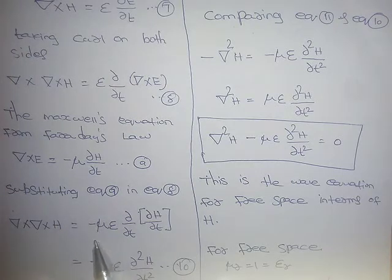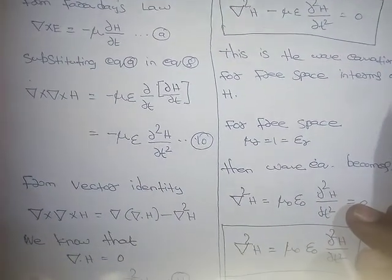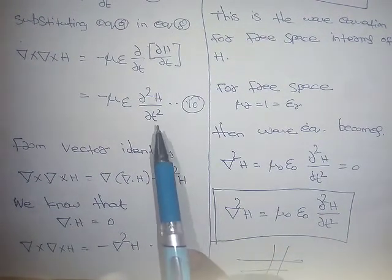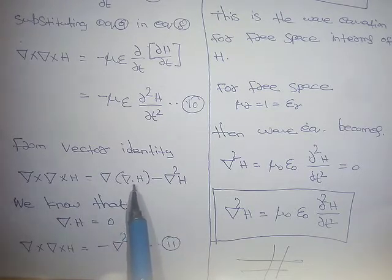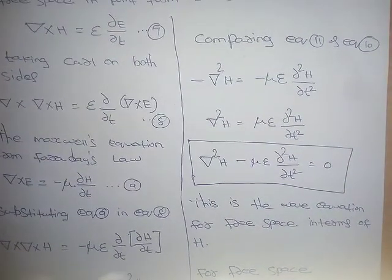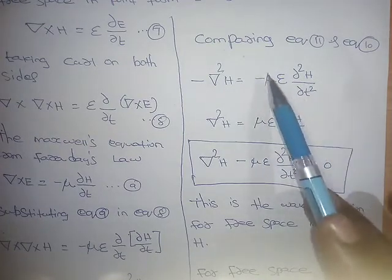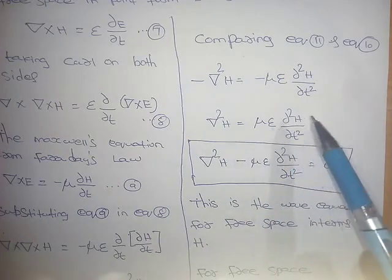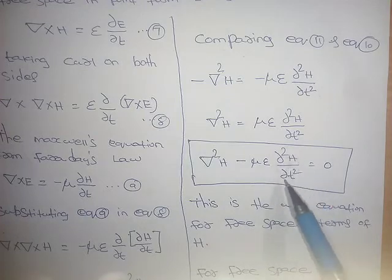Substituting: del cross del cross H equals epsilon d/dt of (minus μ dH/dt), which gives minus με d²H/dt². Using the vector identity and del·H equals zero, we get del cross del cross H equals minus del²H. Therefore: minus del²H equals minus με d²H/dt², so del²H minus με d²H/dt² equals zero. This is the wave equation in terms of the magnetic field for free space.